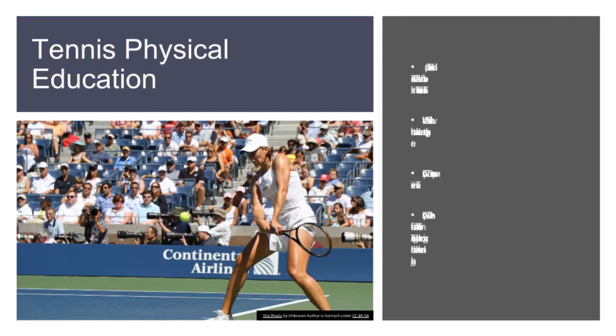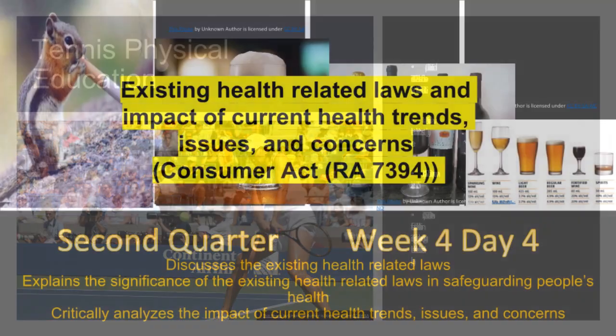Tennis. Activity 1: Compare table tennis and tennis — give the similarities of basic skills in table tennis and tennis, and write the differences between the two when it comes to playing area. Activity 2: Do some warm-up exercises in tennis. Activity 3: Demonstrate the forehand and backhand stroke in tennis using a racket or other materials like a broom and hanger.